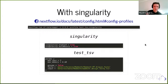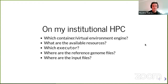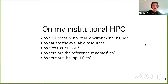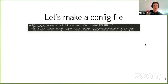But this is only on my computer. Usually what people want to do when running a pipeline is they have big data and it's not working on a single computer. So they want to run it on their institutional server cluster, HPC, or whatever. We need to ask ourselves a couple of questions: which container or virtual environment engine is available? What are the available resources? Which scheduler and executor are we using? Where are the reference genome files? And where are the input files? So if we have all that, then we can put everything in a config file. I'm on my institutional server here — it's a fictional server, so it won't work for any of you — but let's say that it works.